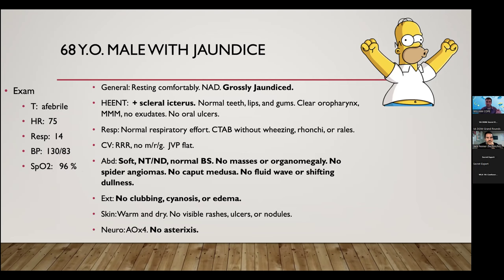On examination, he is grossly jaundiced — very significantly jaundiced — with scleral icterus. His abdomen is soft and non-tender with normal bowel sounds. No masses are felt. He doesn't have spider angiomas, caput medusae, fluid wave, or shifting dullness. No clubbing, cyanosis, edema, or asterixis. Vitals: afebrile, heart rate in the 70s, breathing comfortably at 14 breaths per minute, blood pressure in the 130s over 80s, saturating well on room air.